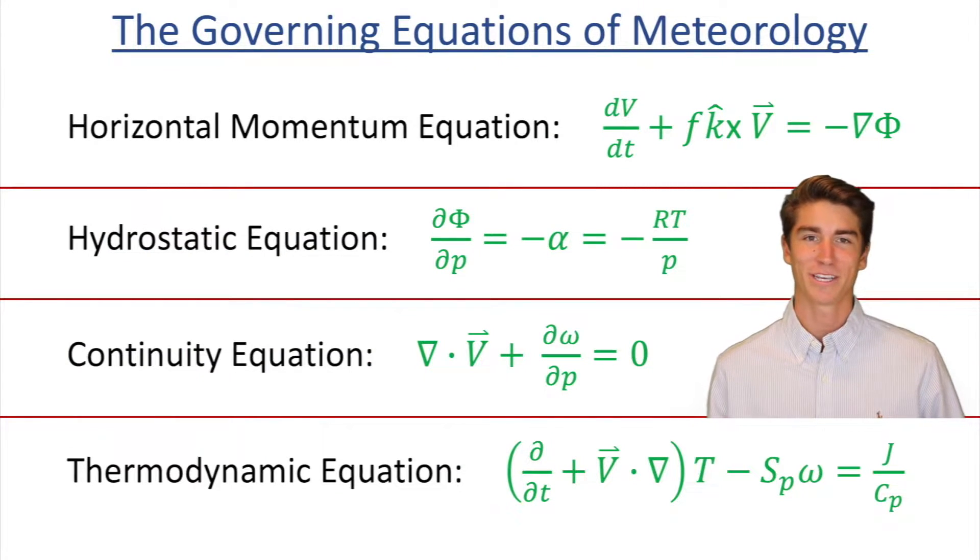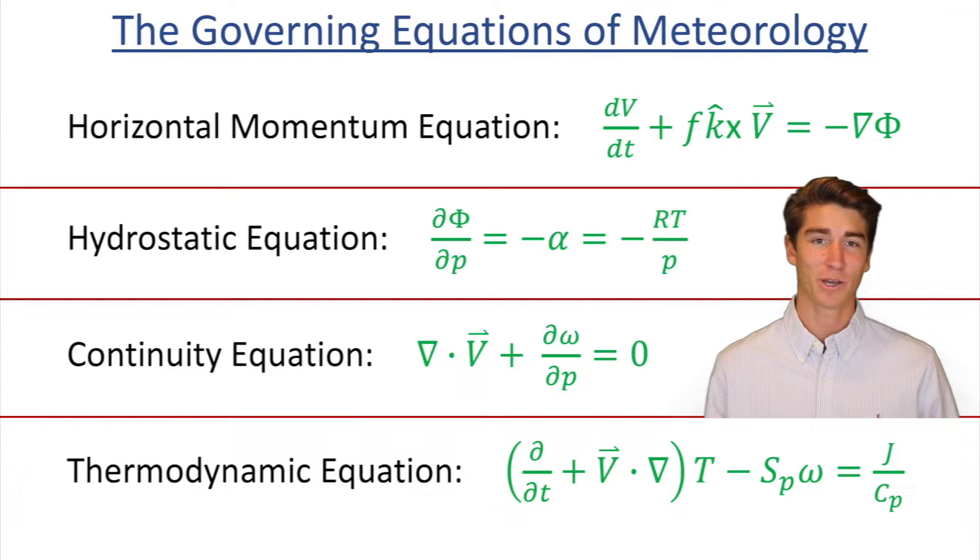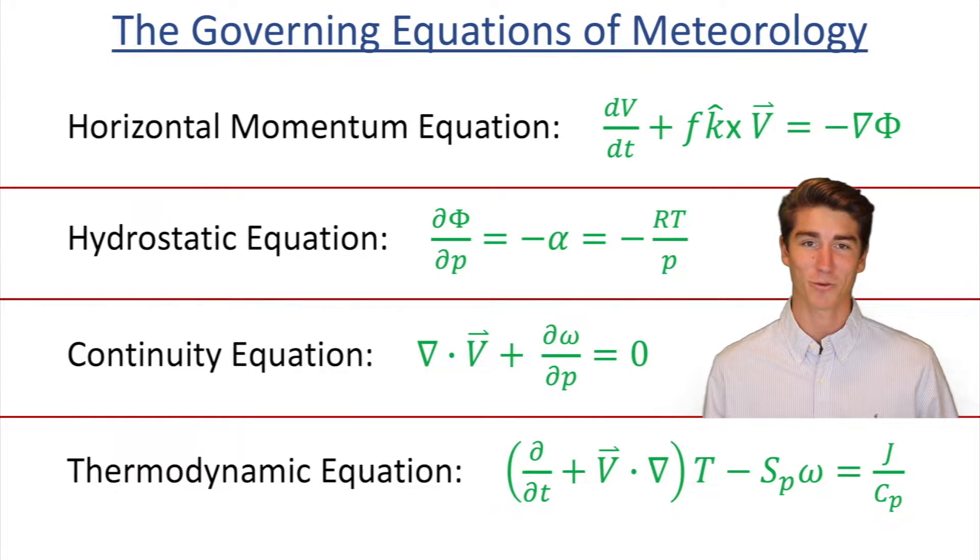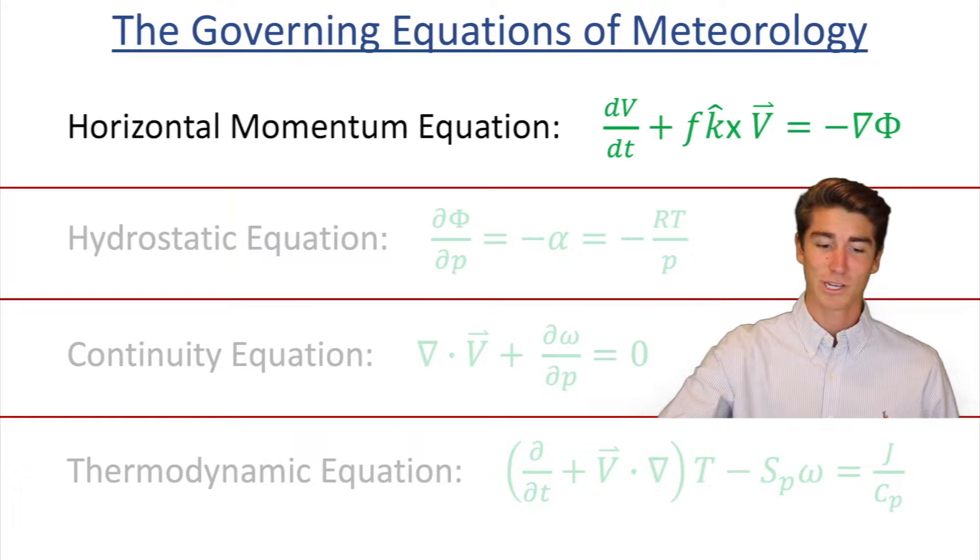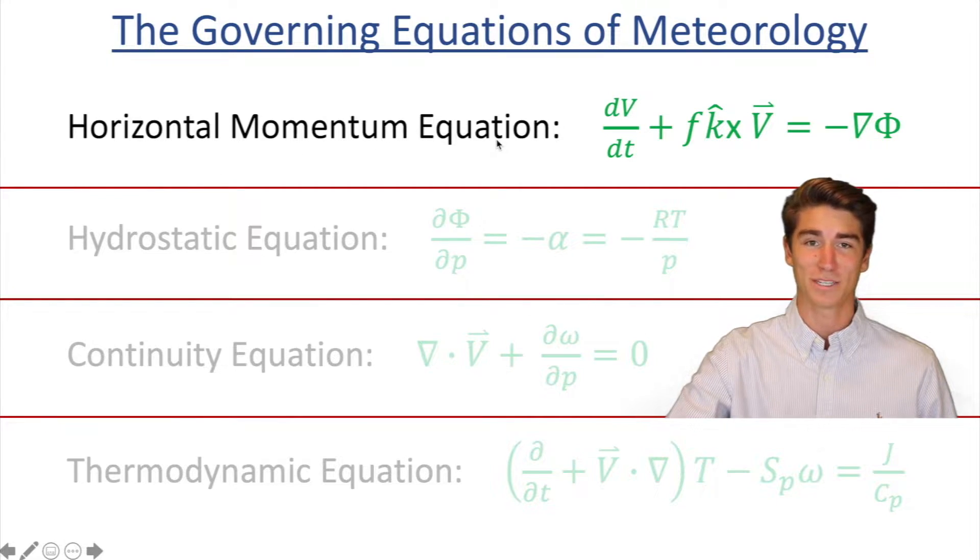Diving into my screen here you see the governing equations of meteorology. These four equations are the horizontal momentum equation, the hydrostatic equation, the continuity equation, and the thermodynamic equation. But today, we're just going to be focused on the horizontal momentum equation.